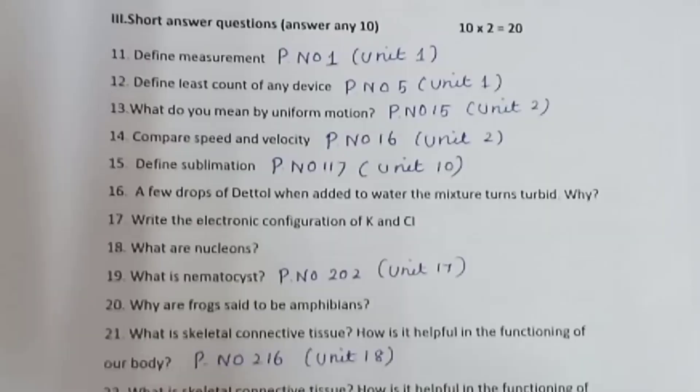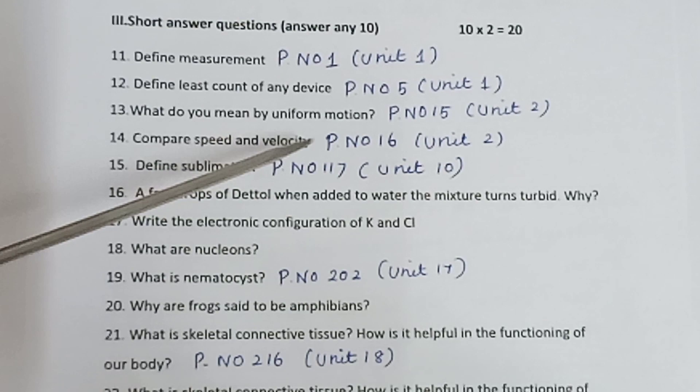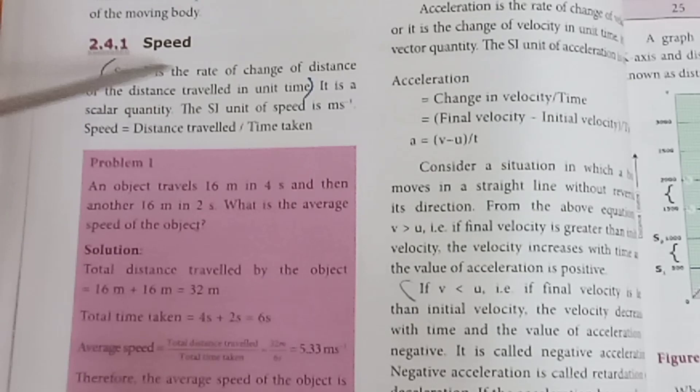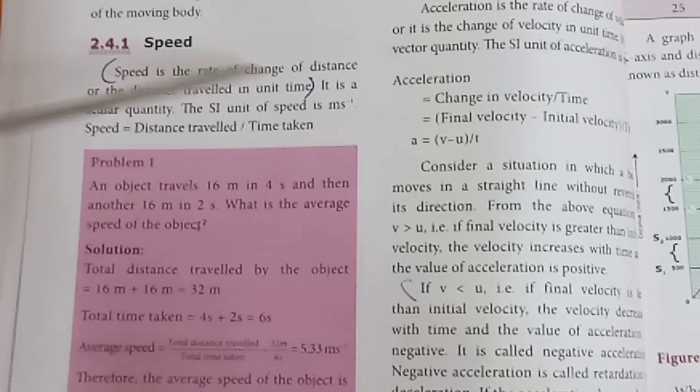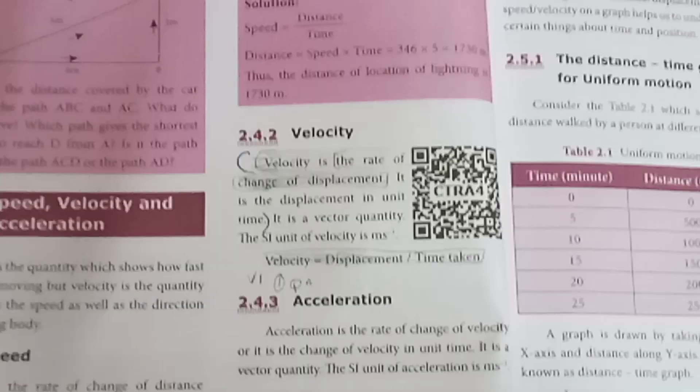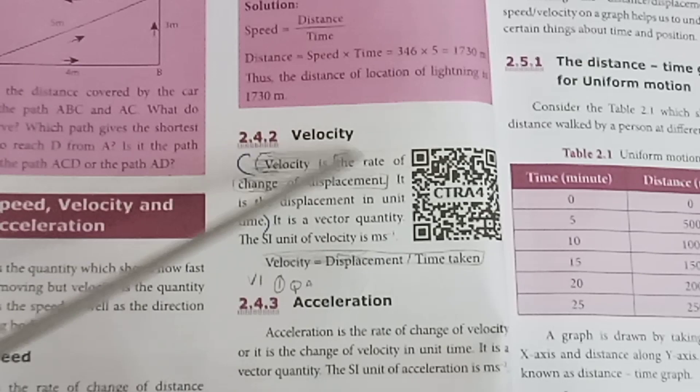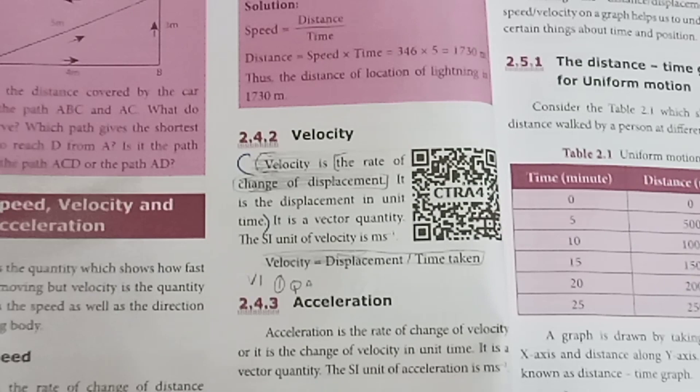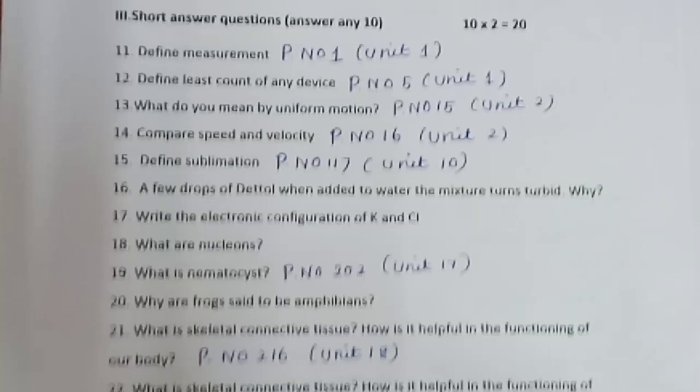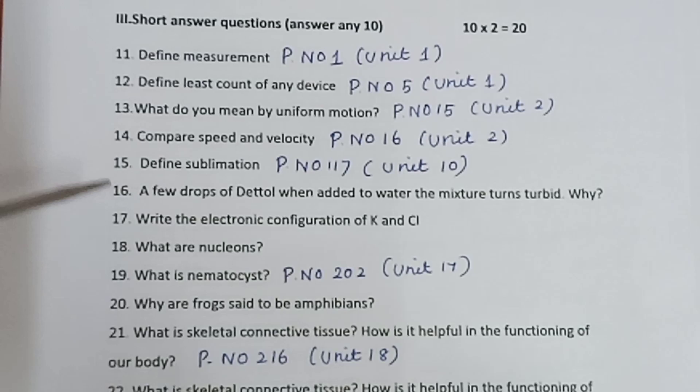Question 14: Compare speed and velocity. Page number 16, Unit 2. Speed is the rate of change of distance or distance travelled per unit time. Velocity is the displacement in unit time. You can write this in tabulation format.